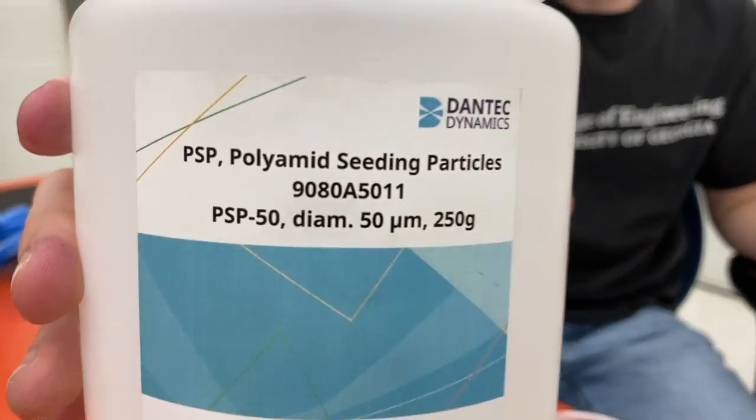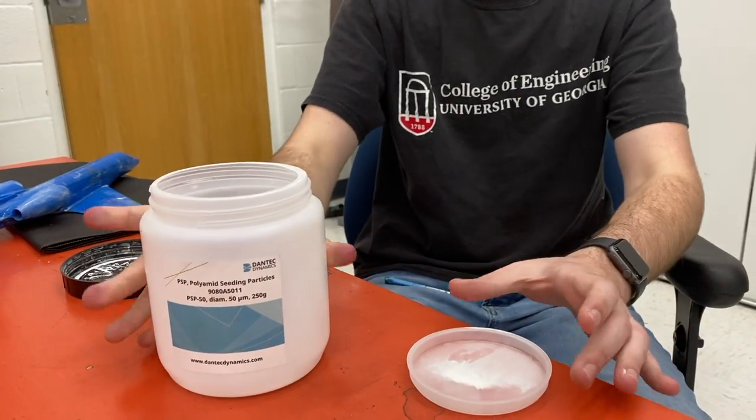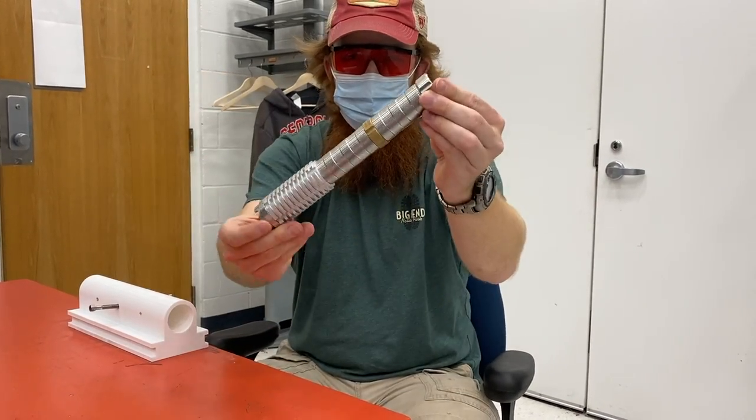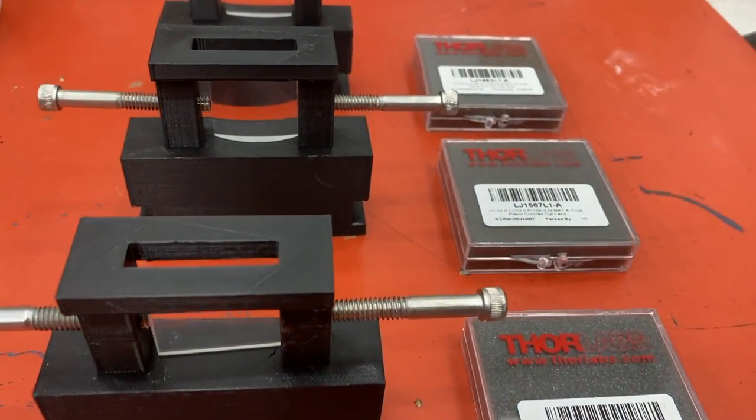Step 2: Our 1.2-watt laser pointer was split into a sheet of light by a cylindrical lens configuration. In our project, the lens configuration is as follows: first, a lens with a 60-millimeter focal point, then 100 millimeters, and then 200 millimeters.